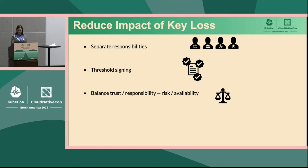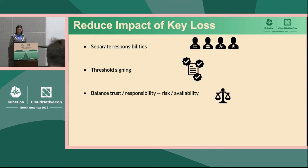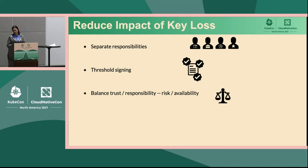This can also be nice for ensuring some process is followed. For example, if there's a code review process where you want to ensure a certain number of people have reviewed the code before it goes to the next step, you can enforce this by requiring a threshold on that. TUF also balances trust and responsibility by ensuring that the more vulnerable roles have less of an impact when those roles are compromised. So roles that have online keys and require a lot of automation have less immediate impact when compromised, giving the system time to recover before anything really bad happens with these more vulnerable roles.